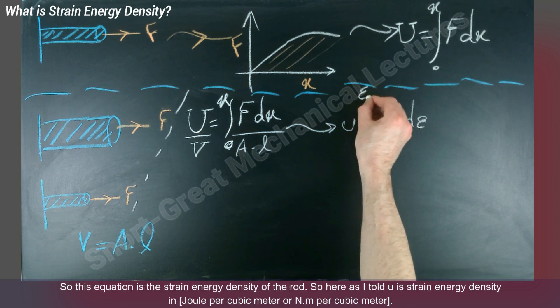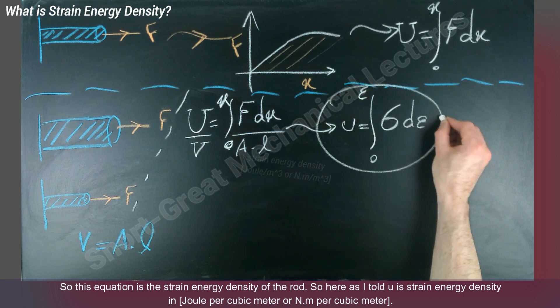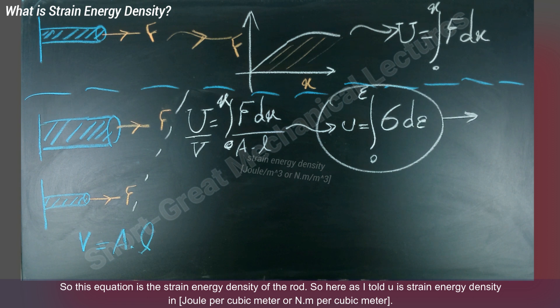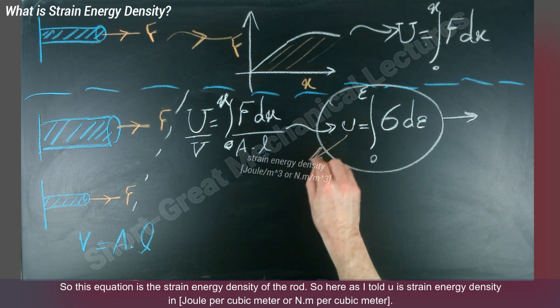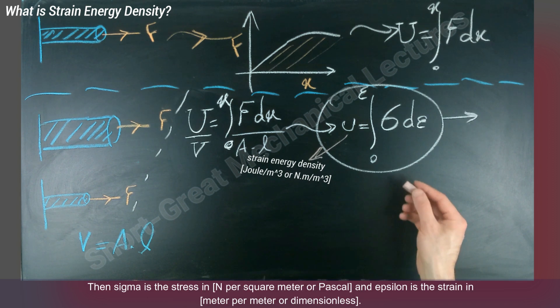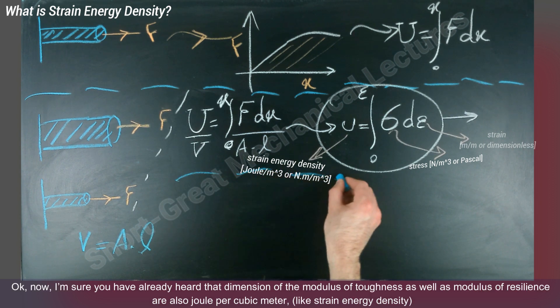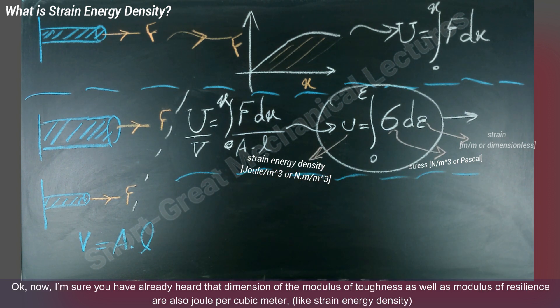So this equation is the strain energy density of the rod. Here, as I told you, is strain energy density in joules per cubic meter or newton-meter per cubic meter. Then sigma is the stress in newtons per square meter or pascal, and epsilon is the strain in meter per meter or dimensionless. Now I'm sure you have already heard that the dimension of the modulus of toughness as well as modulus of resilience are also joules per cubic meter, like strain energy density.